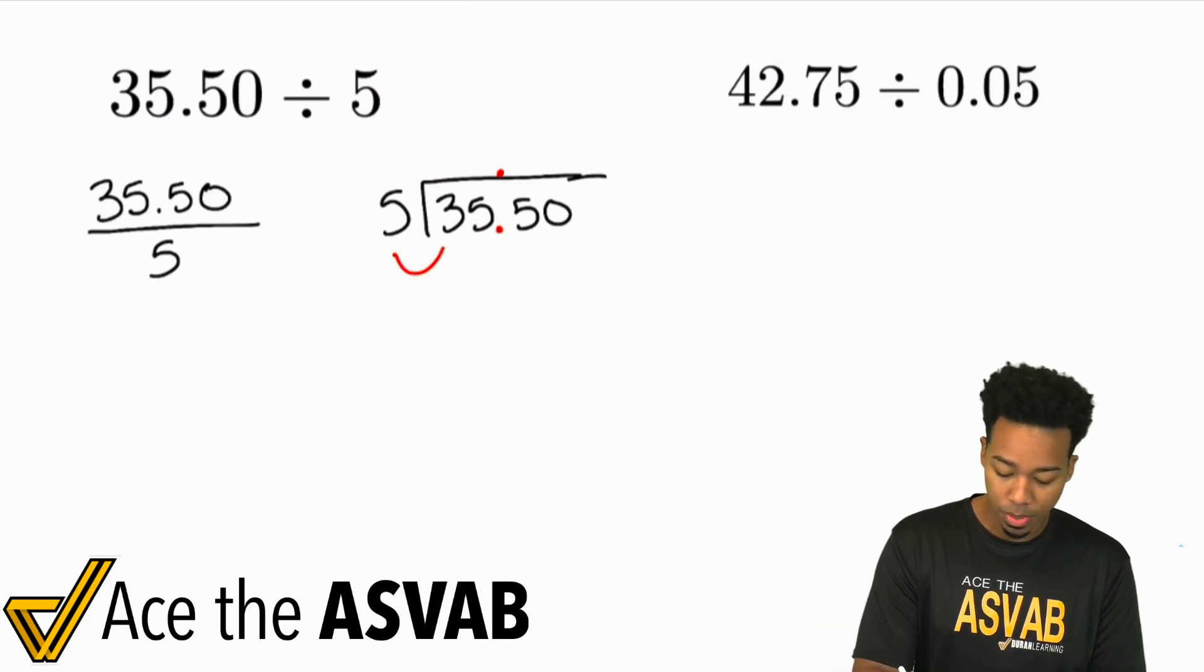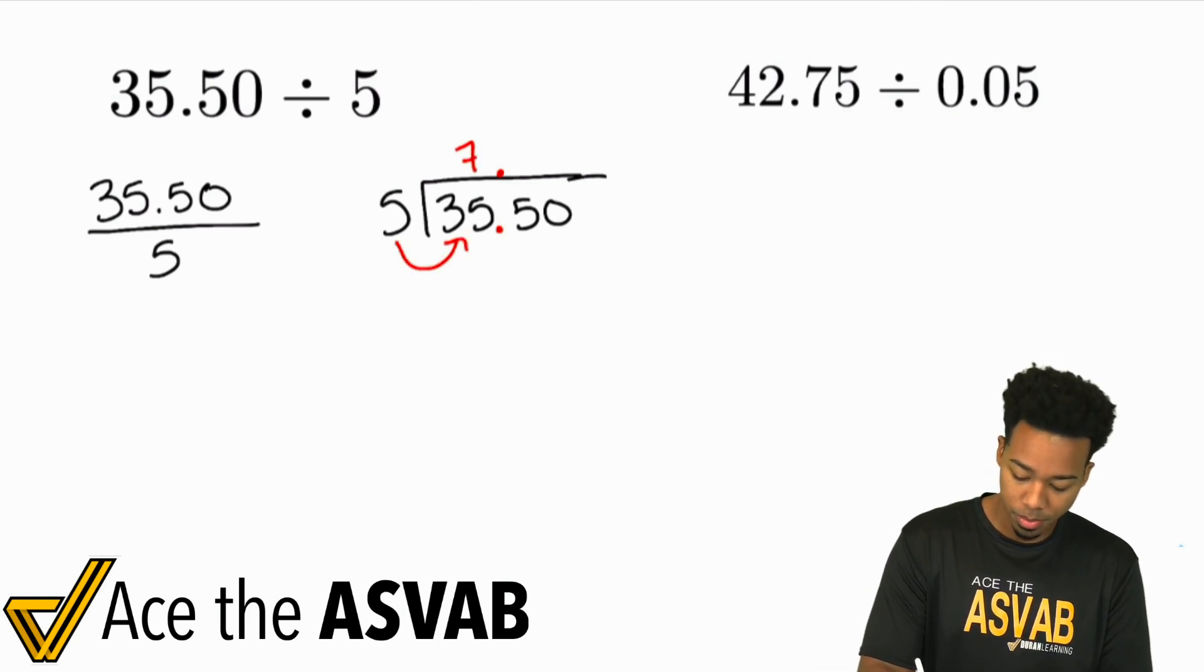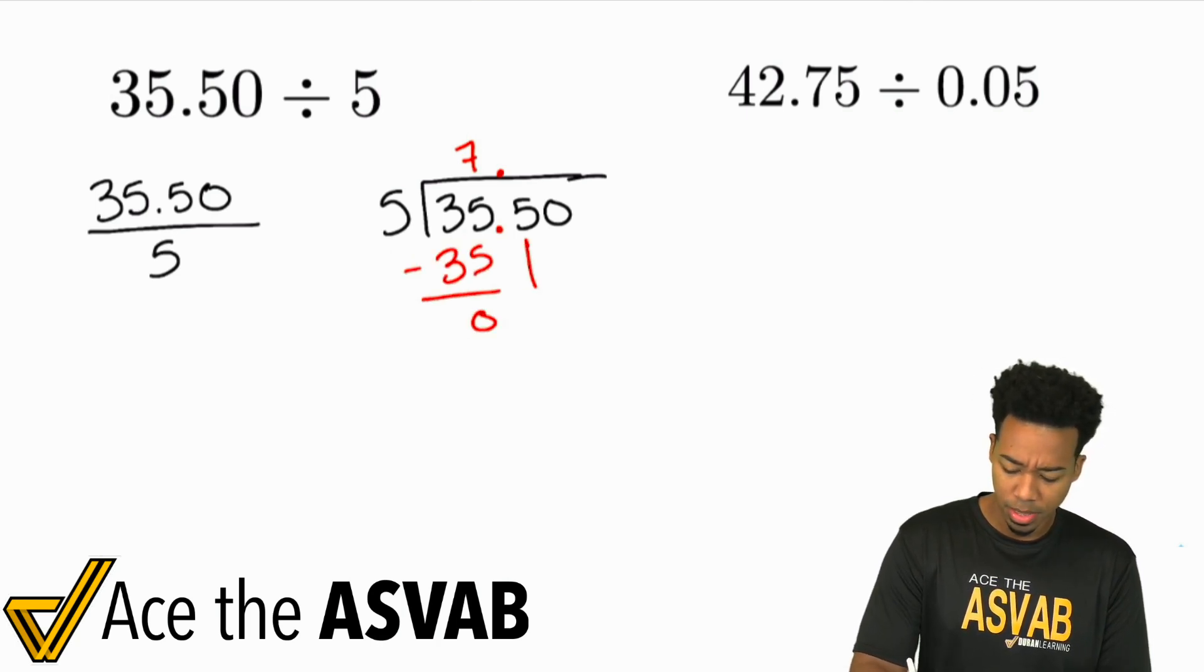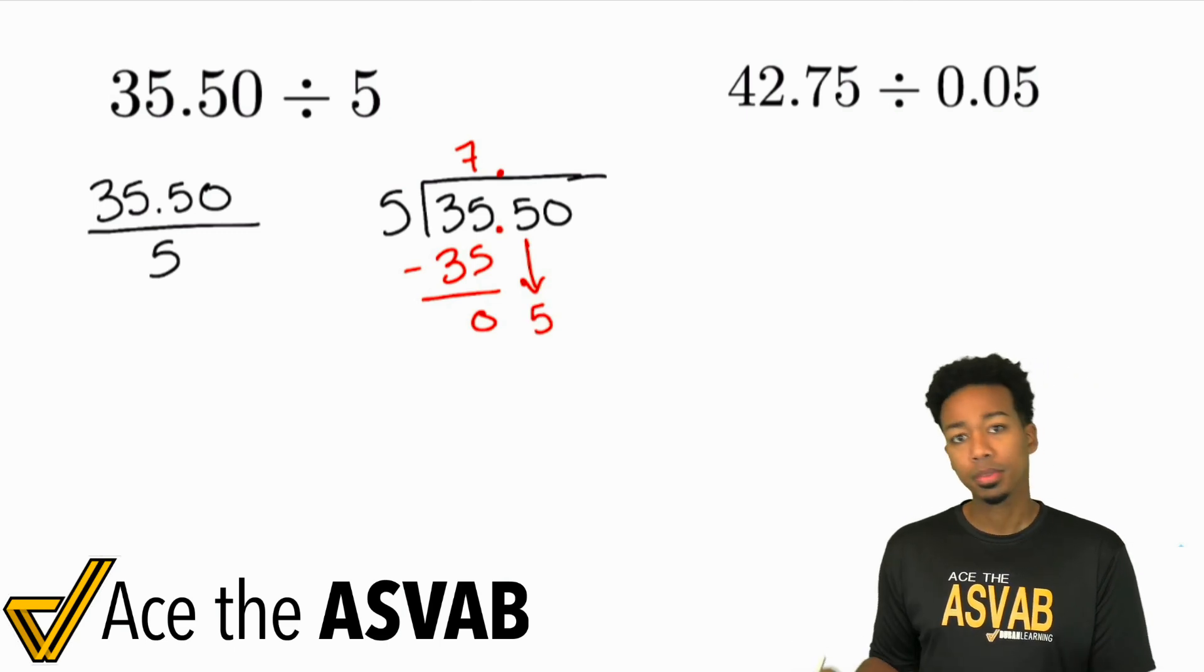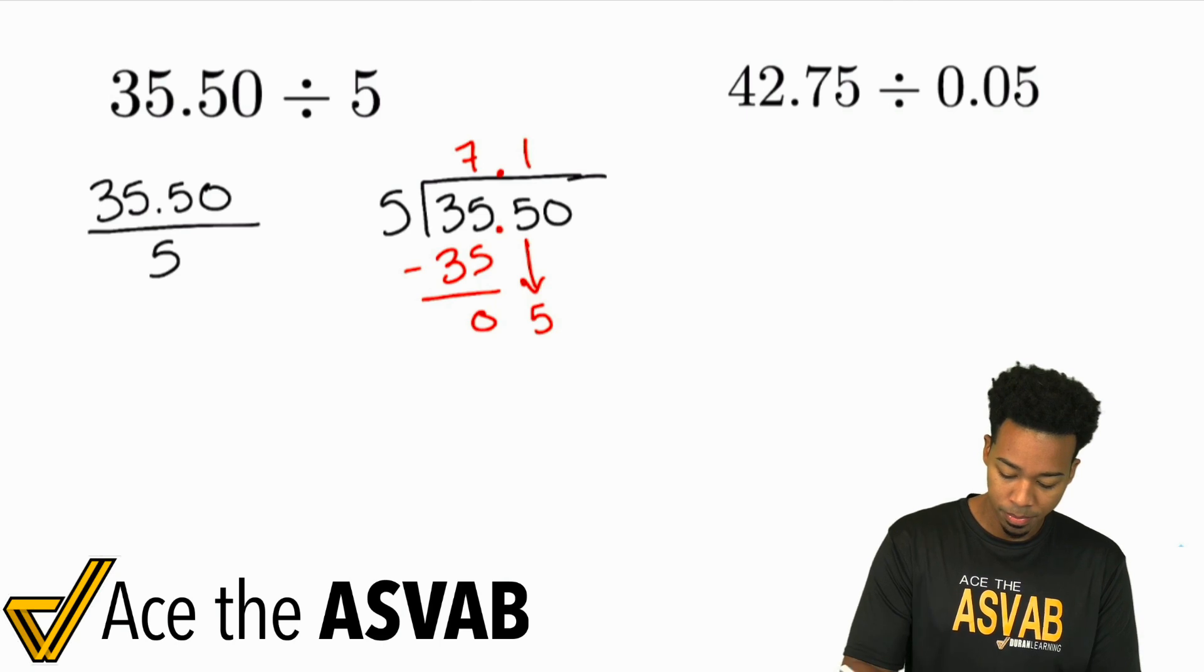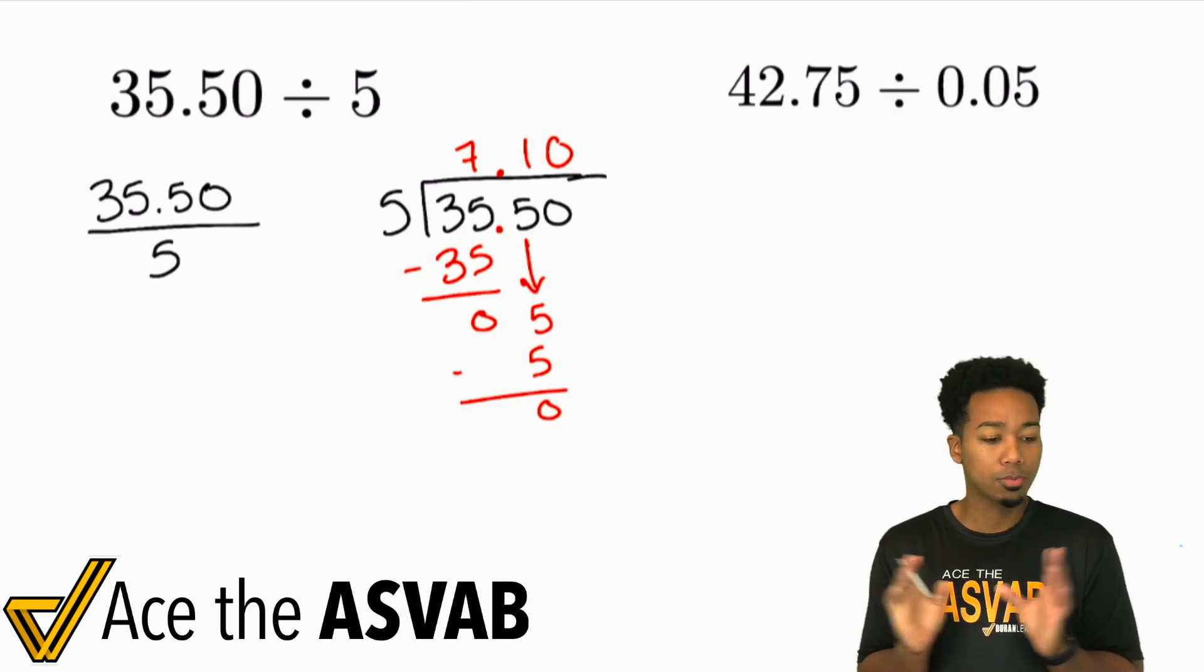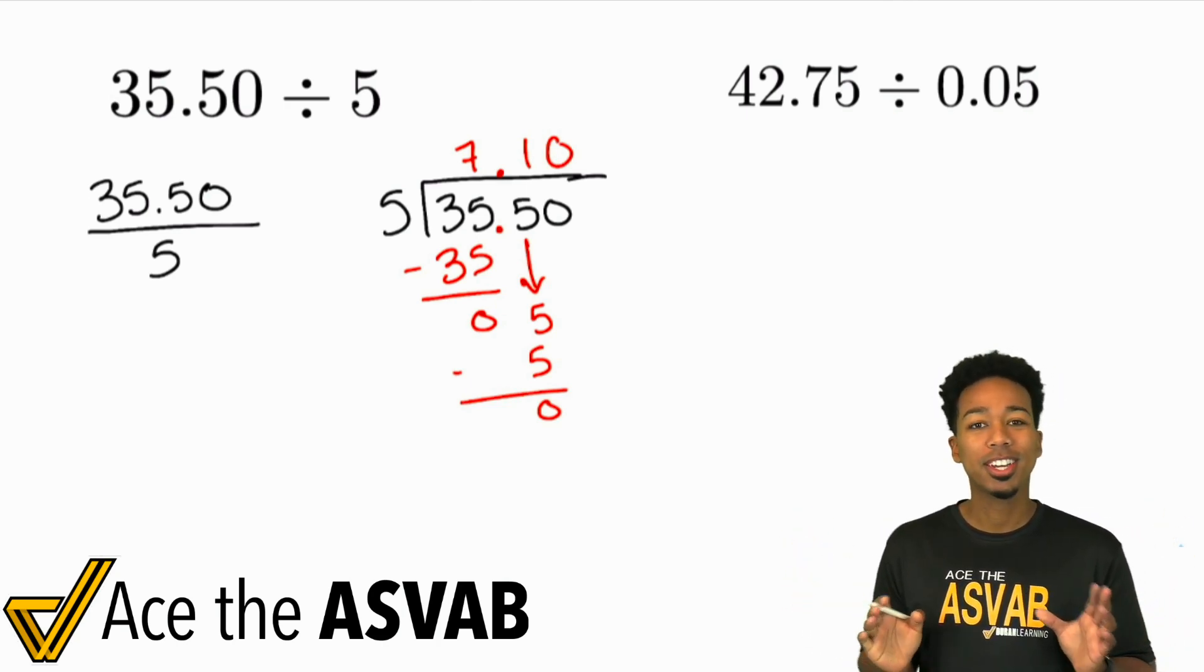So 5 goes into 3 zero times, so we can't do that. 5 goes into 35 though, 7 times. So we'll go ahead and subtract that 35 nice and easy. That's gonna be zero. Then you bring down that 5. 5 goes into 5, how many times? That's going to be 1. And then that's it. Because it was clean and you're good. So then there's nothing left to do. That was pretty simple, nice and straightforward. And we're good.